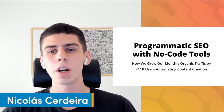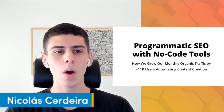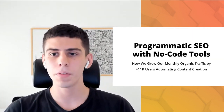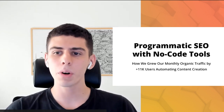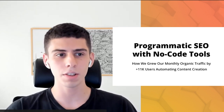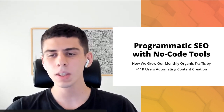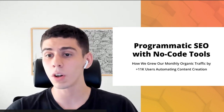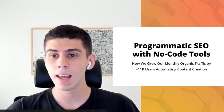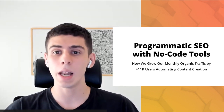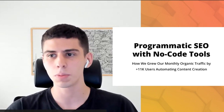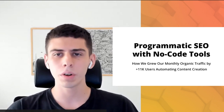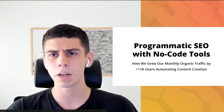Today I will be sharing with you how we have used no-code tools at Failory to run a programmatic SEO content strategy and to create content at scale and grow our organic traffic. By 11,000 users per month — our current organic traffic per month is around 80,000 users.